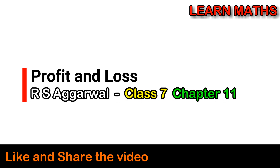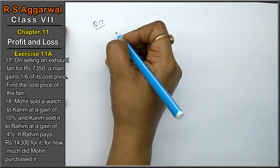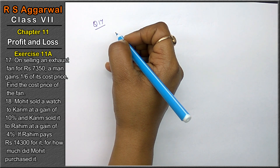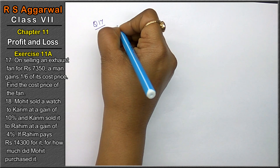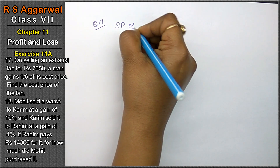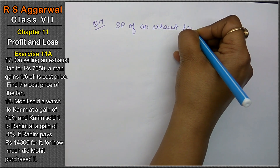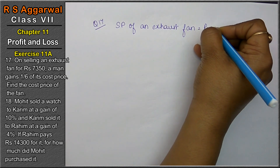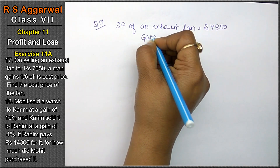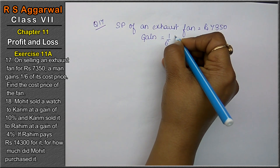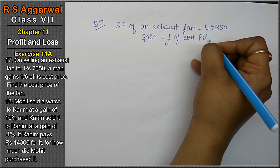Let's do question number 17 of exercise 11A, that is profit and loss. Question number 17: on selling an exhaust fan for Rs. 7,350 — so selling price of an exhaust fan equals Rs. 7,350 — a man gains 1/6th of cost price. Find the cost price of the fan.